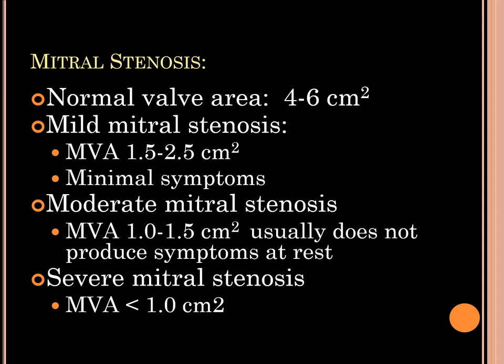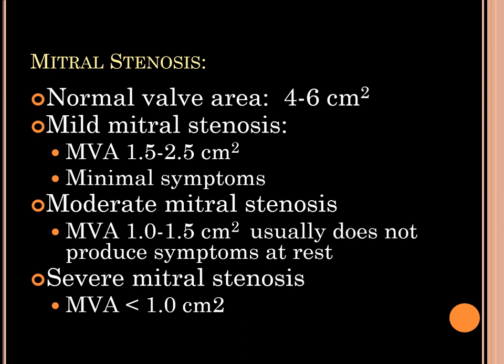The normal valve area is 4 to 6 cm². Mild mitral stenosis is between 1.5 to 2.5 cm², sometimes with symptoms but majority asymptomatic. Moderate mitral stenosis is between 1 to 1.5 cm², usually producing symptoms on exertion. Severe mitral stenosis is obviously symptomatic with a mitral valve area less than 1 cm².